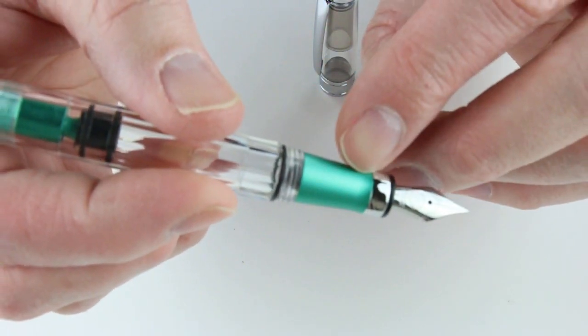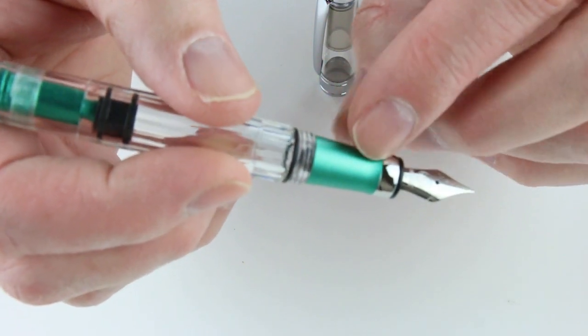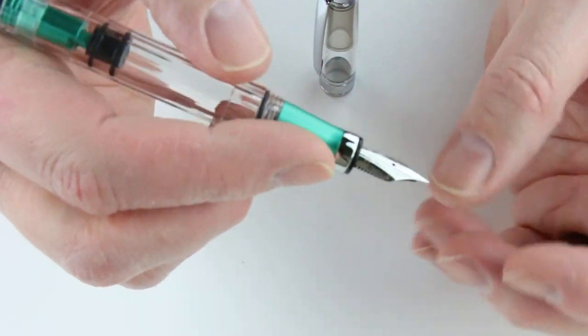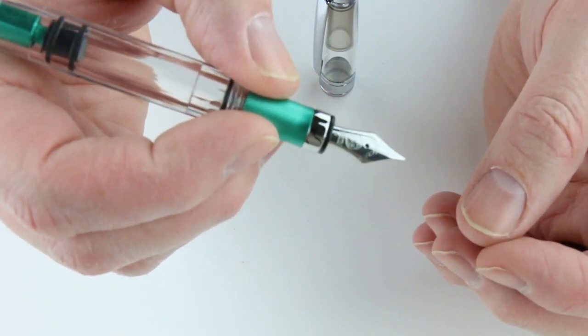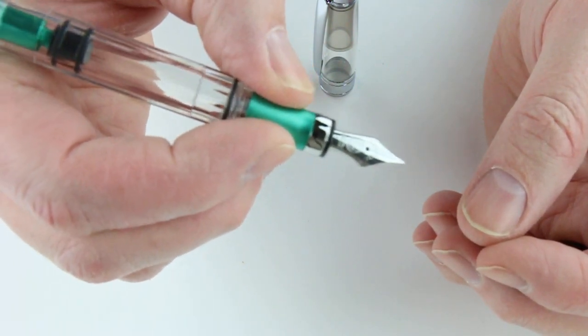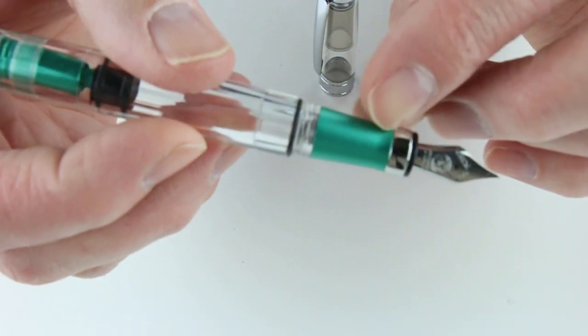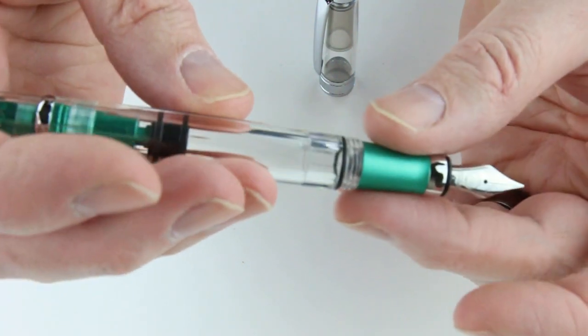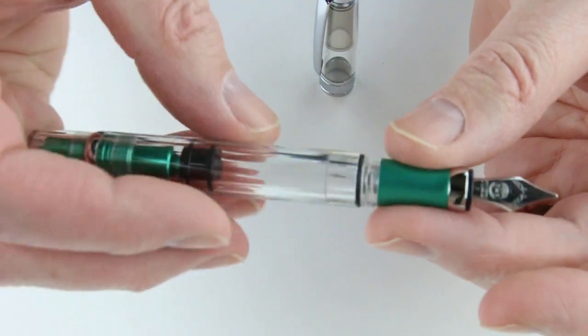You can see the matching section of the pen. There are little grooves cut into the section, so it's not slick even though it's metal. It allows you to hold it quite well. There's a chrome colored ring with a black feed and stainless steel nib engraved with the TWSBI logo.